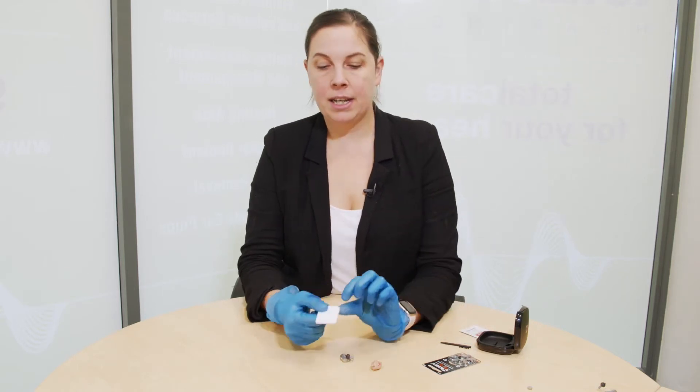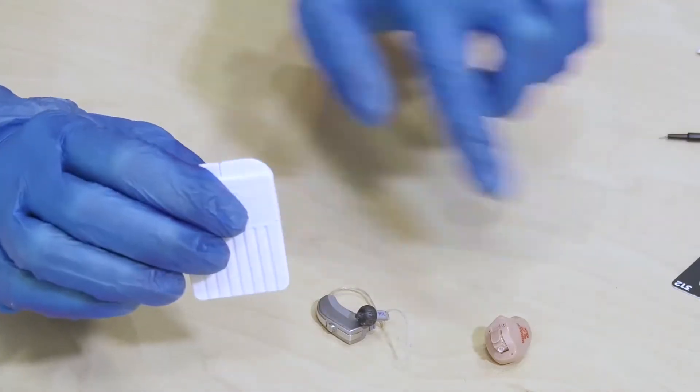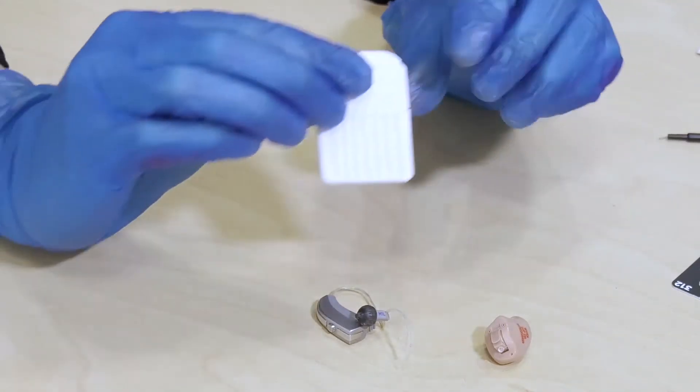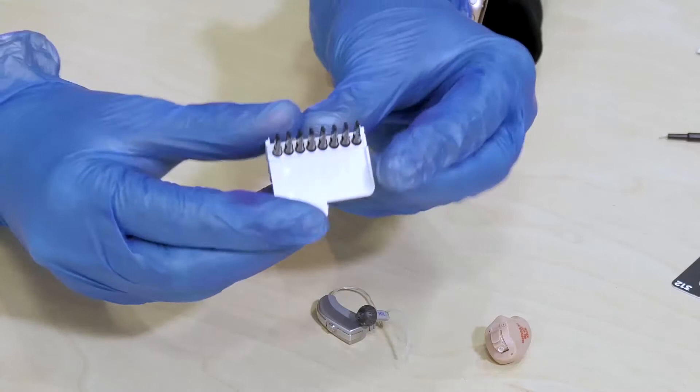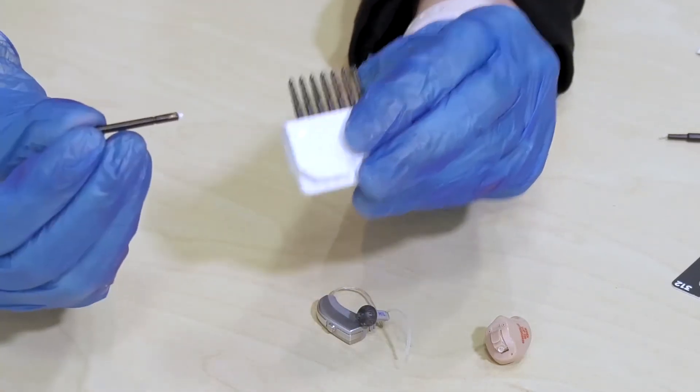Now the wax filter in both of these hearing aids is the same. So what I've got is the ones that come in a packet like this but I'll show you how to change it in both of the hearing aids. So you want to open the packet, take out one of the little black sticks that are inside the packet.